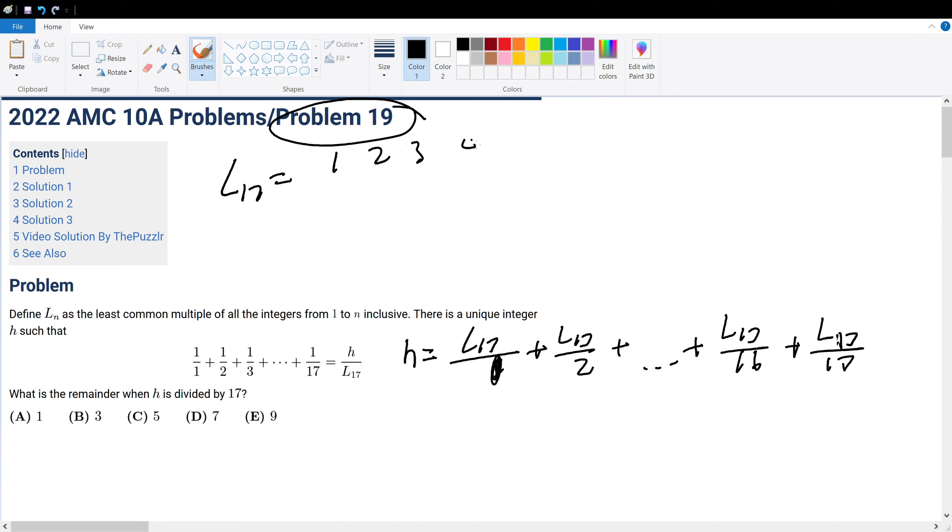Now, we could find what L17 is, so let's first bash it out real quick. It won't take that long. So, just write 1, 3, 2, 3, 4, 5, 6, 7, 8, 9, 10, 11, 12, 13, 11, 14, 15, 16, 17.